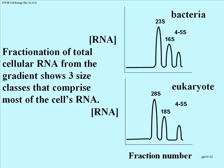The plot shows fractionation of total cellular RNA — the top graph is bacteria and the bottom is eukaryotic RNA. Measuring RNA in every tube reveals three different size classes in both bacteria and eukaryotes. Eukaryotic RNAs are a bit larger: 28S, 18S, and 4-5S, whereas bacteria have 23S, 16S, and 4-5S. The S stands for Svedberg, the man who developed ultracentrifugation. The numbers are a calculation based on the radius of the centrifuge rotor and the position of material in the gradient. Each band corresponds to a certain mass related to its Svedberg unit.